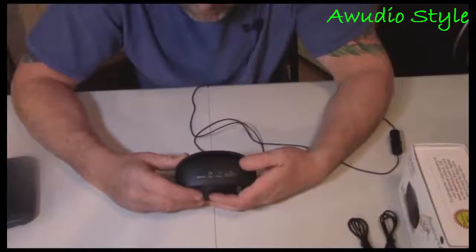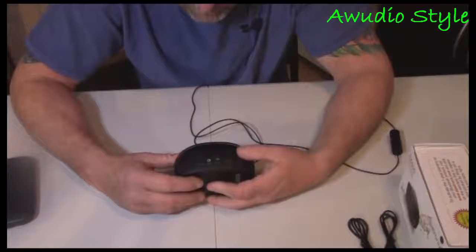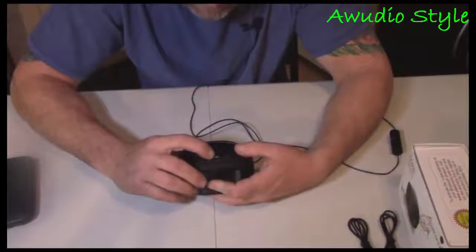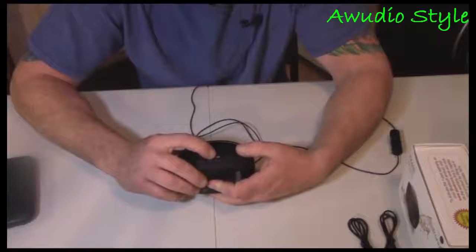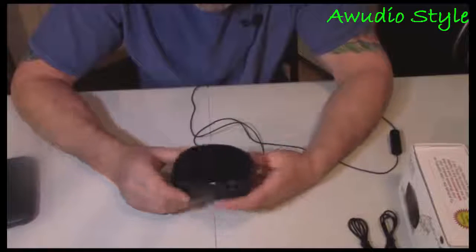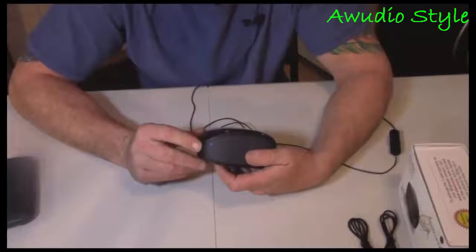On the back side here you just have your power on and off. You can hear it come on. You have your auxiliary jack, your DC 5 volt, this is where you're going to charge it.